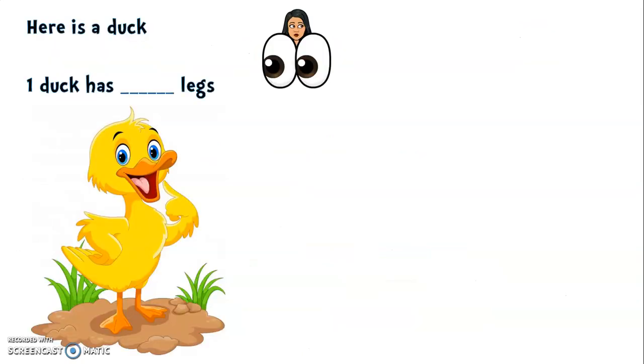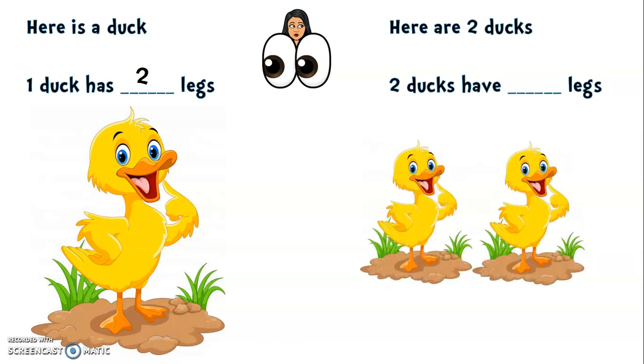Here is one duck. One duck has two legs. Very good! Let's see, here are two ducks. Two ducks have how many legs? Now it's time to use a sum to help us find the answer. Our sum would be 2 + 2. And if we count the legs all together, we would get the answer four.